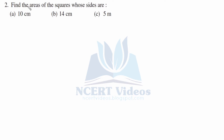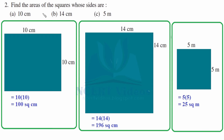Second question: find the areas of the squares whose sides are given. First part: 10 centimeter. The formula for a square is side squared, so 10 into 10. We simply multiply it — this is 100 square centimeter.